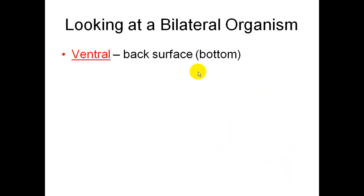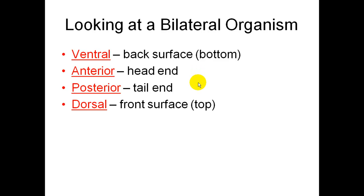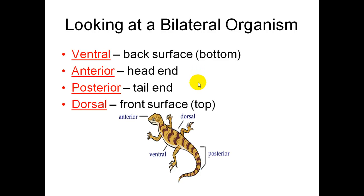Looking at a bilateral organism, these are terms you need to know when we start doing dissections. Ventral is the bottom or the back surface. Anterior is referring to the head end. Posterior is the tail end. And dorsal is the front surface or the top.